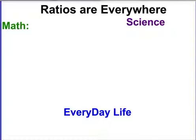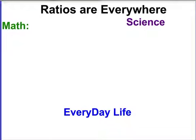Ratios are everywhere. I have three examples: in math, in science, and in everyday life. What you're going to do right now is think first to yourself, then share your ideas with the person next to you. You might want to jot these down so you can remember. A big hint — you should have one for math, and this involves what we did on Monday, so think about what that ratio is. Then think about science and everyday life and jot some ideas down.